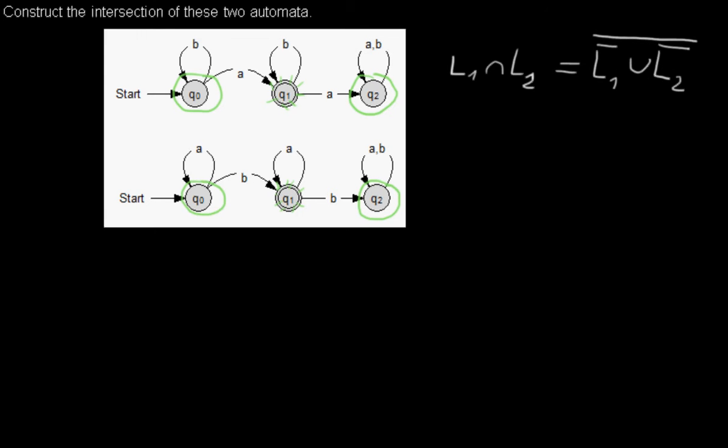I have to create the union. As you may see in one of my other videos, for the union I have to create a new initial state with two epsilon transitions to the previous initial states.